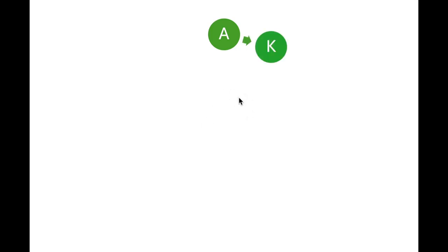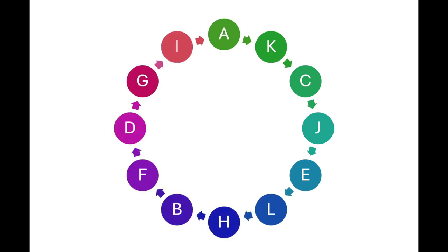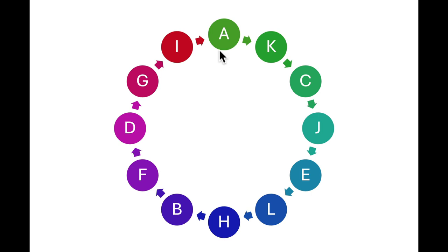I wanted to start by going over the order in which we answer the scavenger hunt. Your answers should follow this circle starting from any point. For example, I'll start with card A, then go to card K, card C, and so on until I complete the cycle. However, you could have started at any point. If you started with card B, you would then go to card F and then D, all the way around back to B.